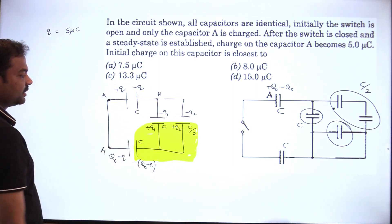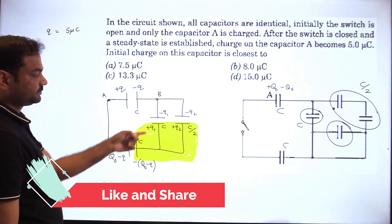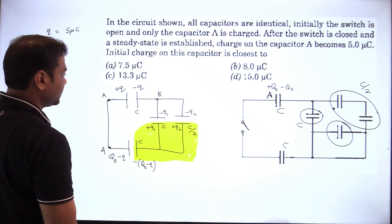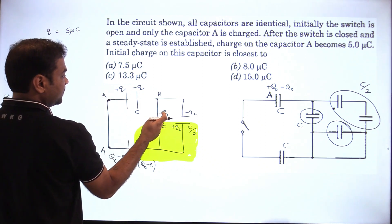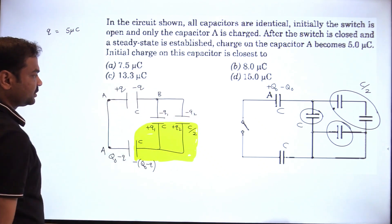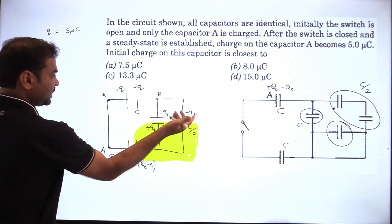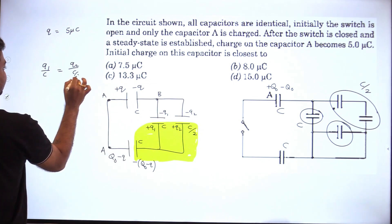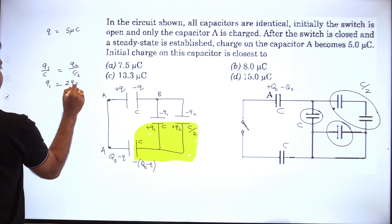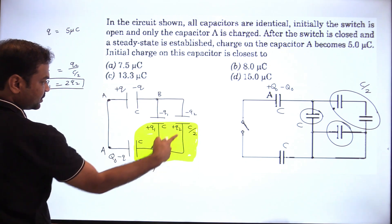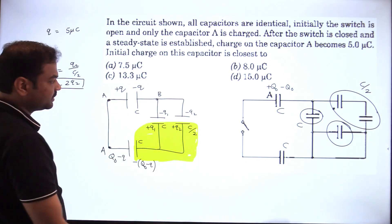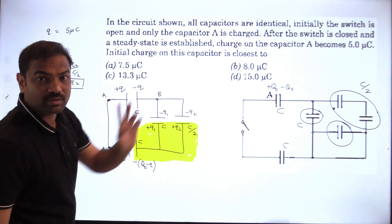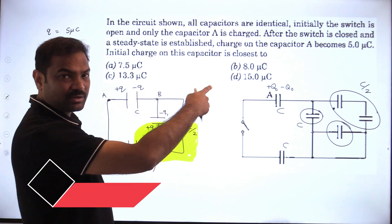We can apply equations. For the parallel combination, I can find the q₁ and q₂ relation. The potential difference gives q₁/c = q₂/(c/2), so q₁ = 2q₂. That is one relation. The other relation from charge conservation on the isolated plates: -q - q₁ - q₂ = -q₀. Using conservation of charge: minus q, minus q₁, minus q₂ should equal minus q₀.